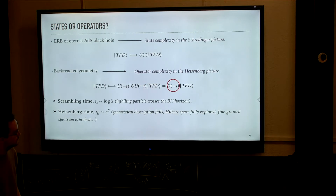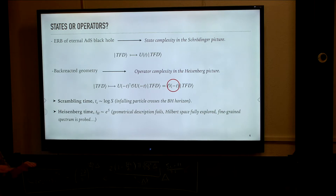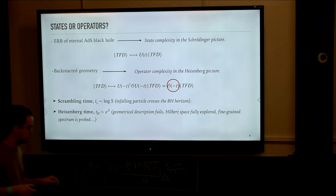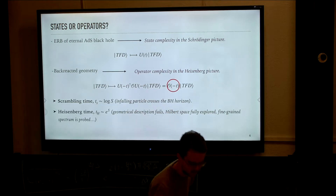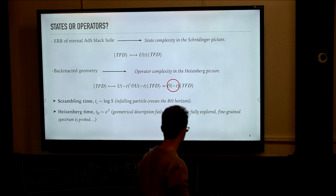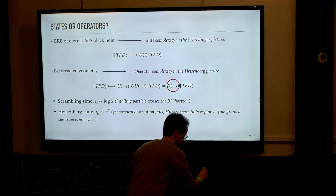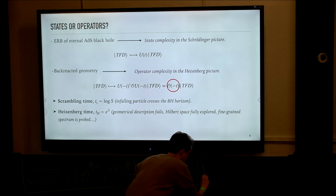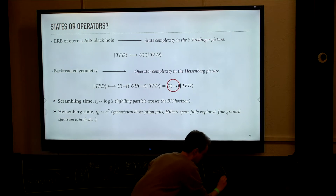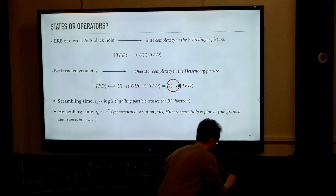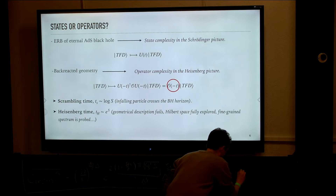Did you define the thermofield double state, by the way? I did not. It's just a maximally entangled state. It's... you can write it on the board. I just wanted to avoid too much clutter. So the thermofield double state is a state that is entangled between the two boundaries. It's not maximally entangled because it's weighted by its Boltzmann factor.